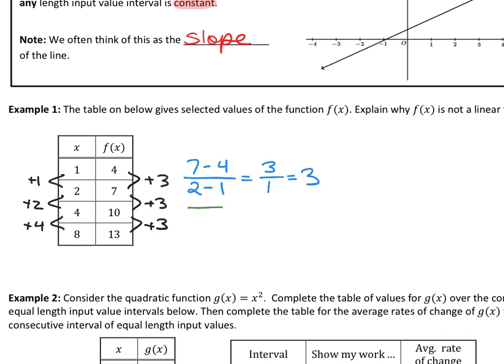Between the next interval from 2 to 4, I'm just scooting down a pair. The outputs would be 10 and 7. 10 minus 7 is still 3, but 4 minus 2 is 2 — that's 1.5. That's not the same slope. The next one, between 4 and 8, that would be 13 minus 10. Do you see what I'm doing with the average rate of change formula each time?